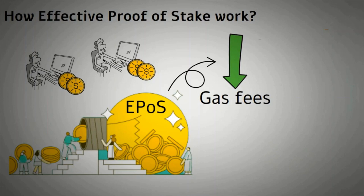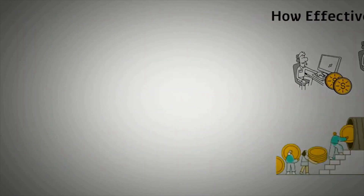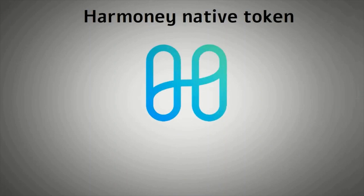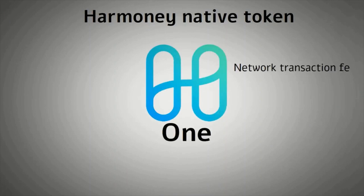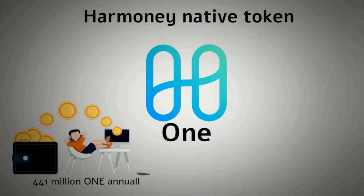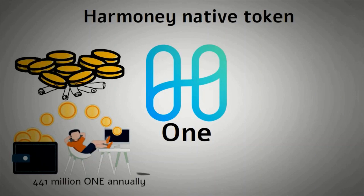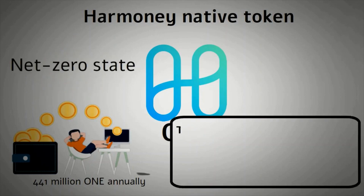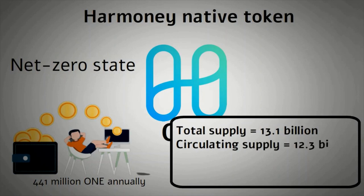Although we are yet to see how Ethereum 2.0 handles fees. Let's look into Harmony's native token, called ONE. The ONE token is used for paying network transaction fees, staking as a delegator or validator in return for block rewards, and taking part in Harmony's open governance mechanism. Harmony provides a constant reward to validators of 441 million ONE annually. Transaction fees are burned with an end goal of creating a net-zero state, offsetting the ONE provided for block rewards. ONE has a total supply of about 13.1 billion, with a circulating supply of about 12.3 billion and a market cap of about $248 million.